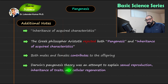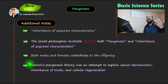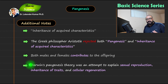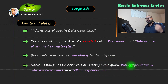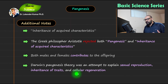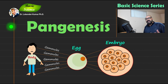Darwin's pangenesis theory was an attempt to explain sexual reproduction and the inheritance of traits, because in offspring you can see characters appearing that were present in the parent. He also tried to explain cellular regeneration, linking gamules with the gonads. The hypothesis was ultimately rejected.